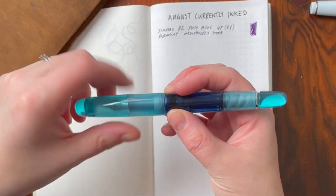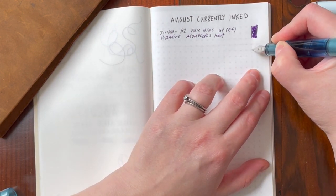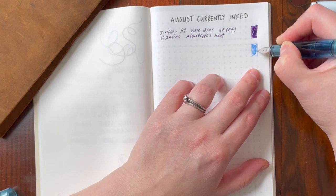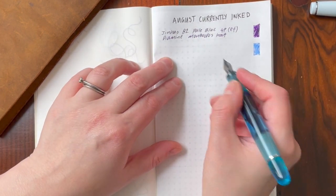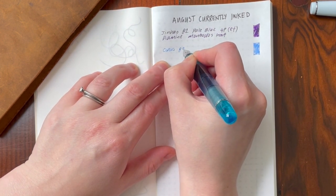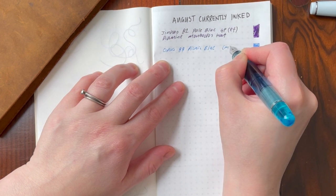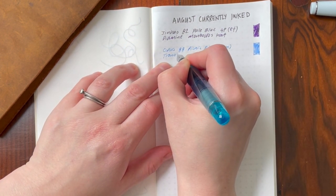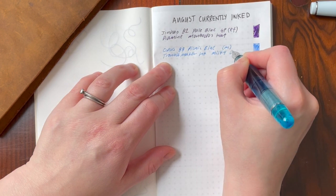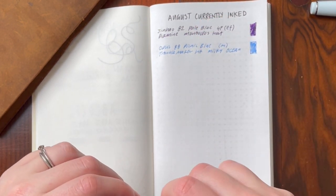Next up, we have the Opus 88 in Picnic Blue. This has a medium nib, and this is inked with Troublemaker Milky Ocean. I have been told by a couple of people, I know Simone let me know, and it does ring true. Oh my god, it's such a dry ink. Which is unfortunate, because it is quite beautiful, but holy moly. It's a dry ink. Oh my god, can you hear that wind? Something to keep in mind if you were thinking about inking up a pen with it. It's beautiful, but really dry.